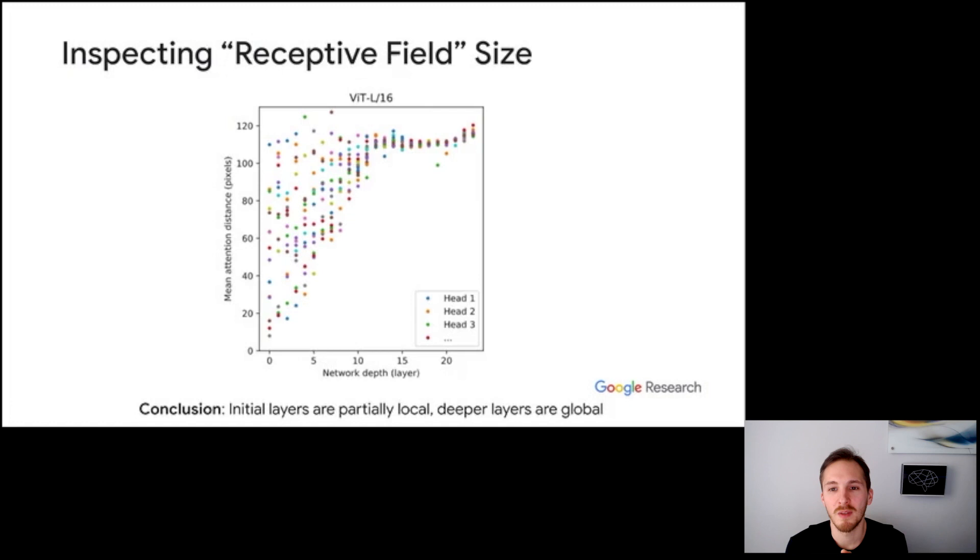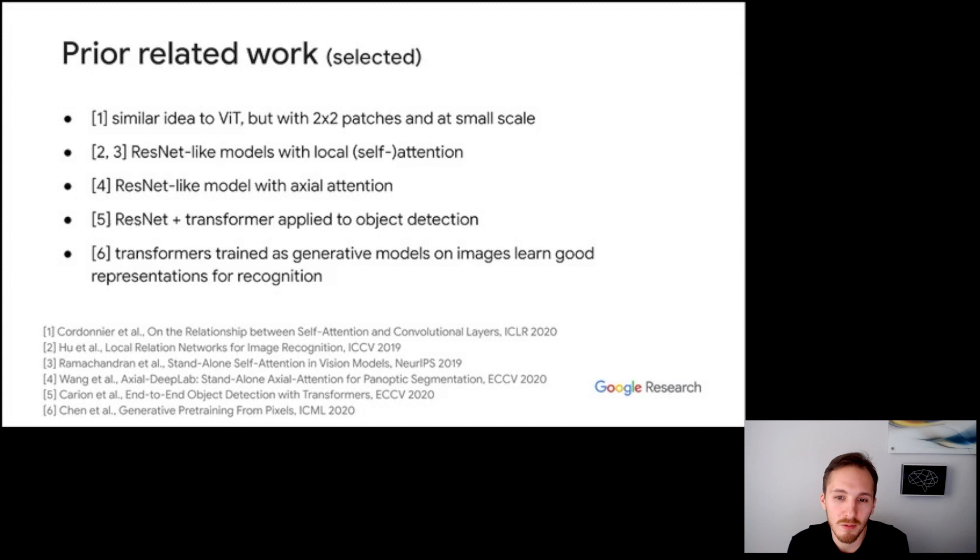Now we analyze the receptive field size of attention heads in ViT. Specifically for each attention head in each layer, we plot the average distance between a query patch and the patches it attends to. For instance, if the patch only attends to its immediate neighbors, then the receptive field is very small. While if it attends to the whole image, the receptive field is large. The x-axis here corresponds to the model's layers and different dots are different attention heads. We can see that in the early layers, some attention heads are local and some are global. And then deeper in the model, attention becomes gradually more global. Starting from roughly the middle, attention is exclusively global. Again, we see that the model learned the intuitive notion of locality in the early layers, but it also has the flexibility to use global attention in all layers if it needs to.